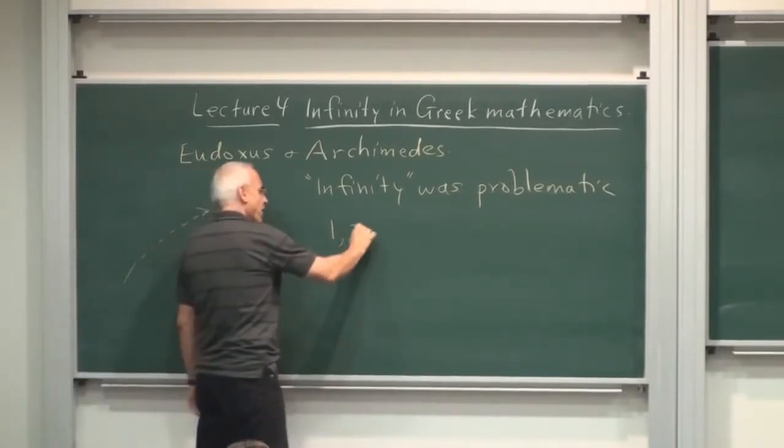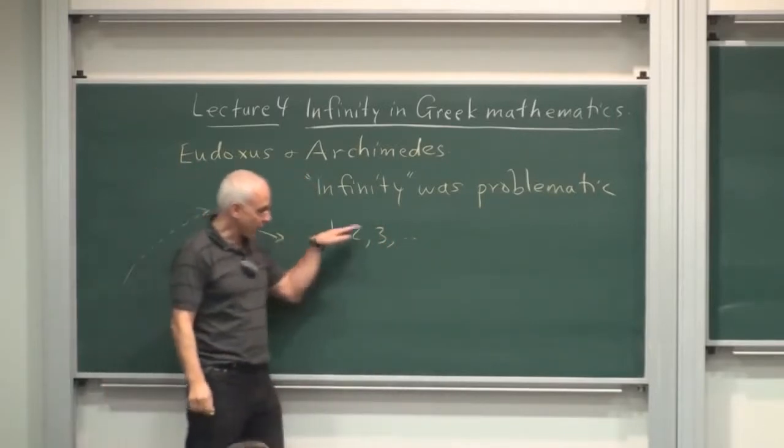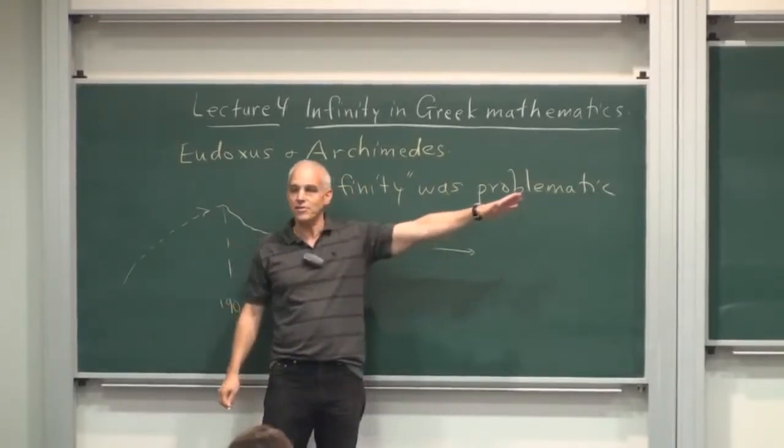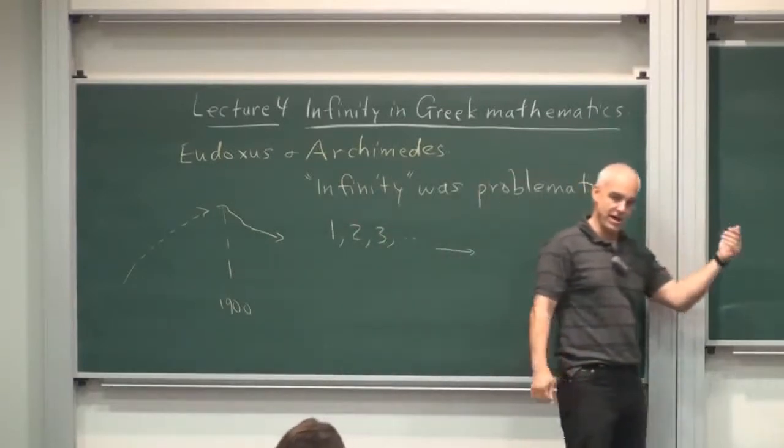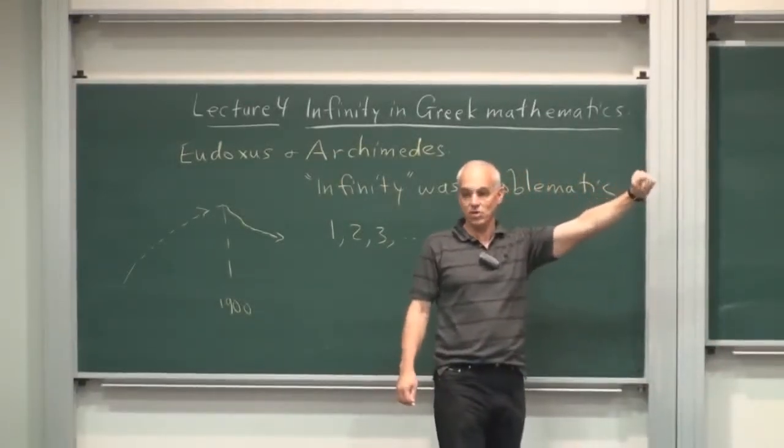So for example, they thought about the sequence of natural numbers as something that went on in that direction, and kept on going beyond one's view. One could go along with it for as long as one had patience and energy, but ultimately the sequence left you behind.